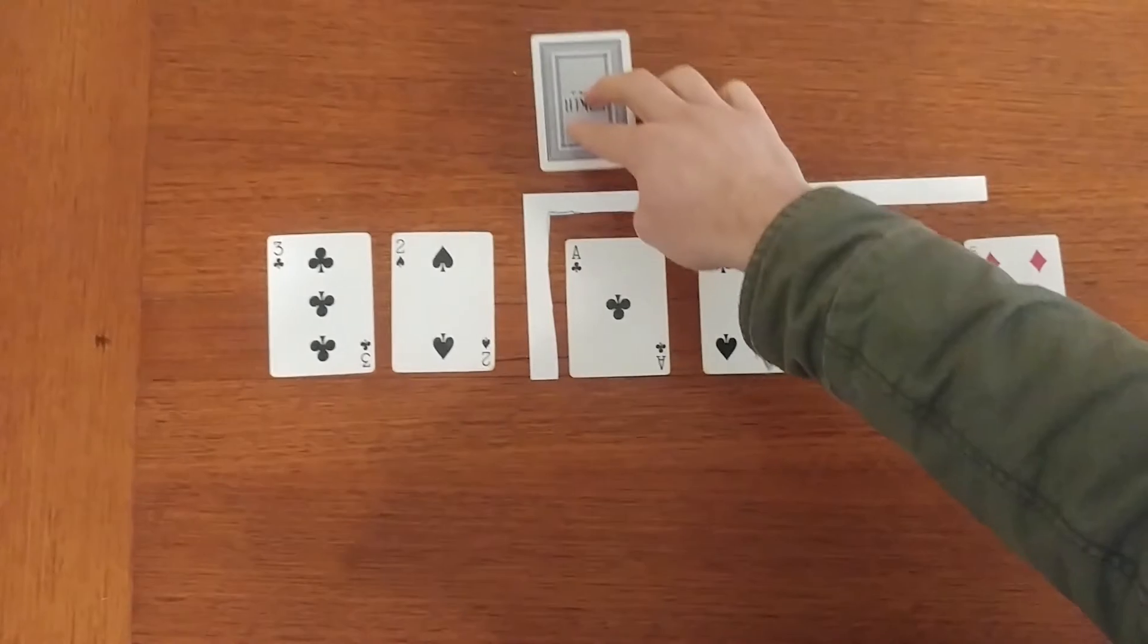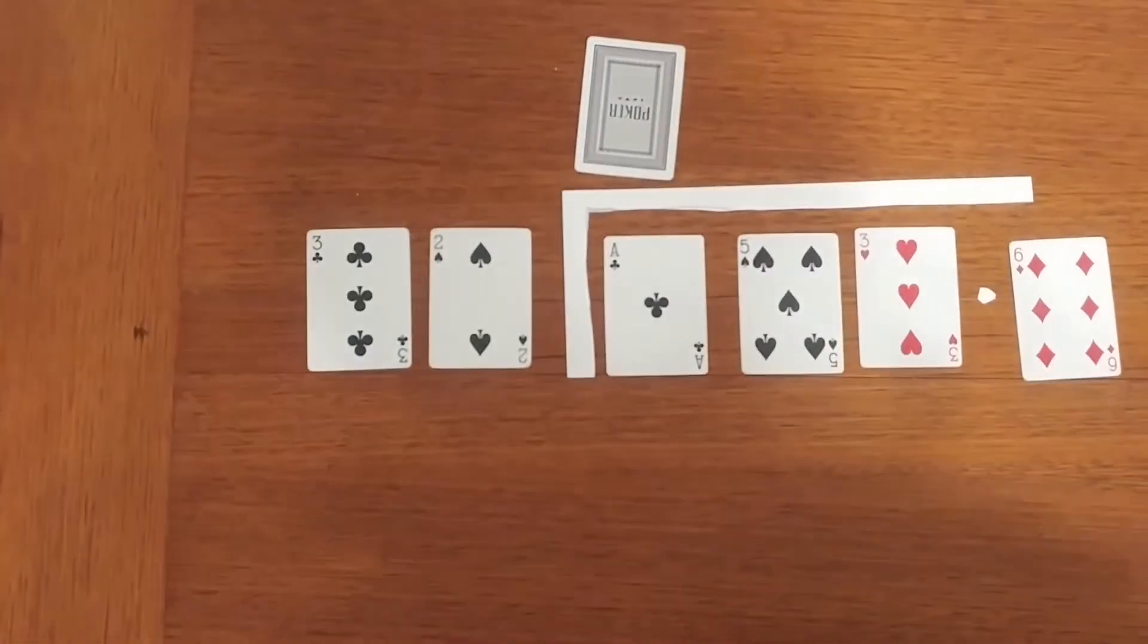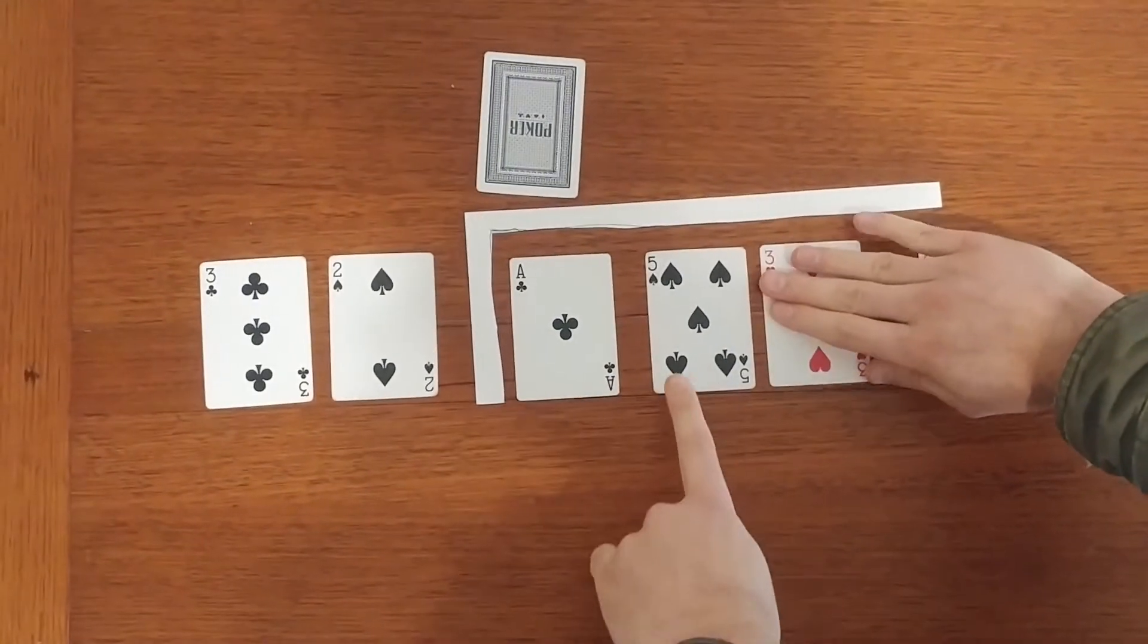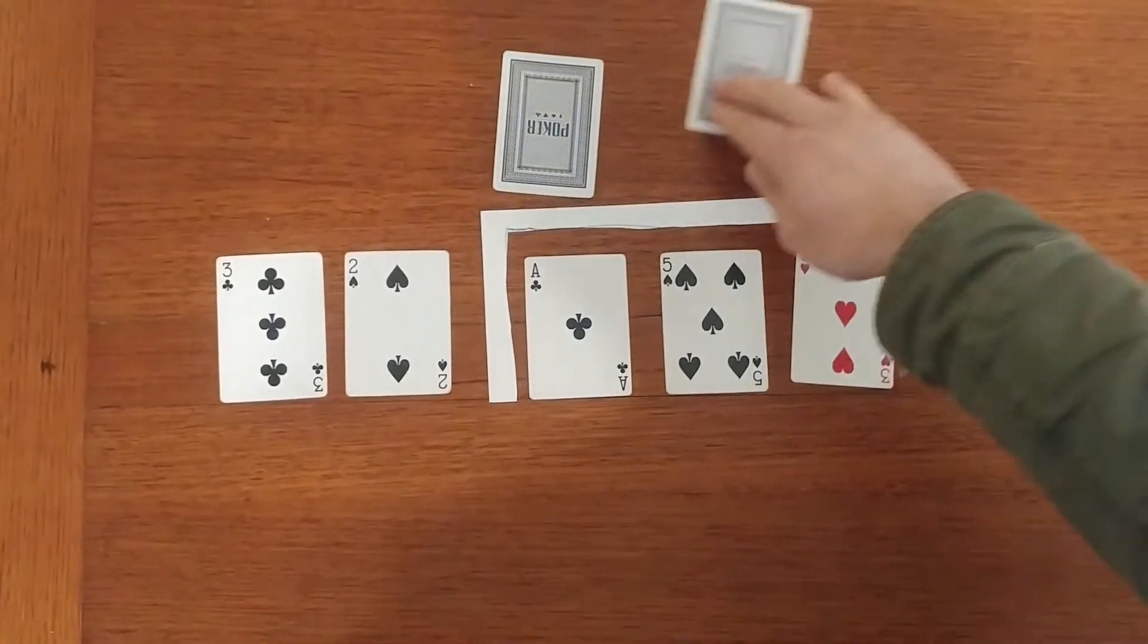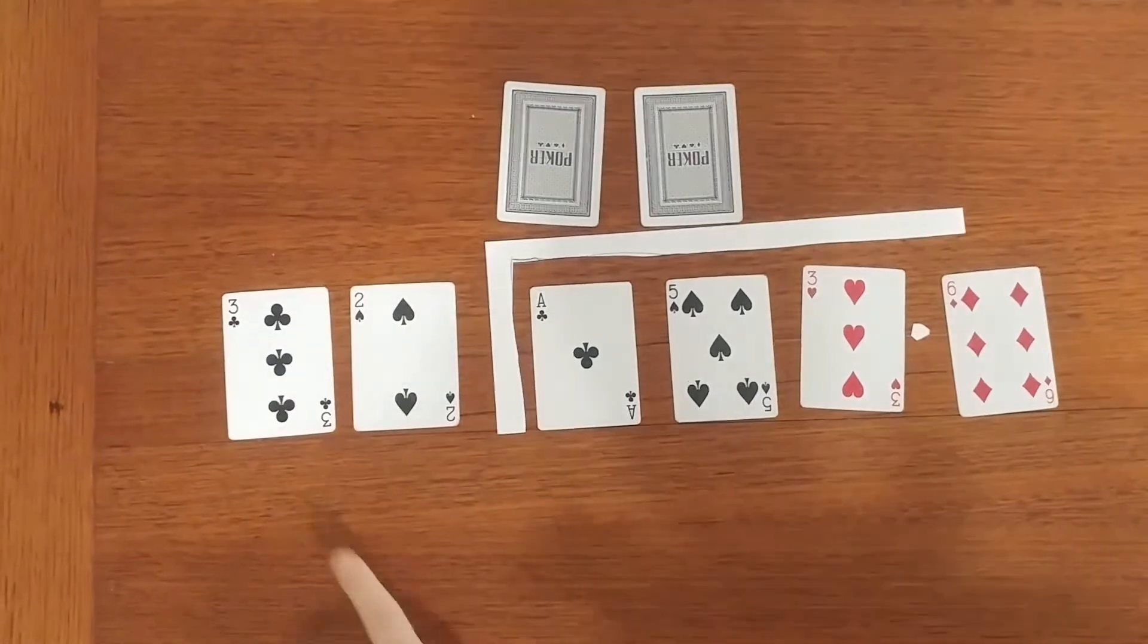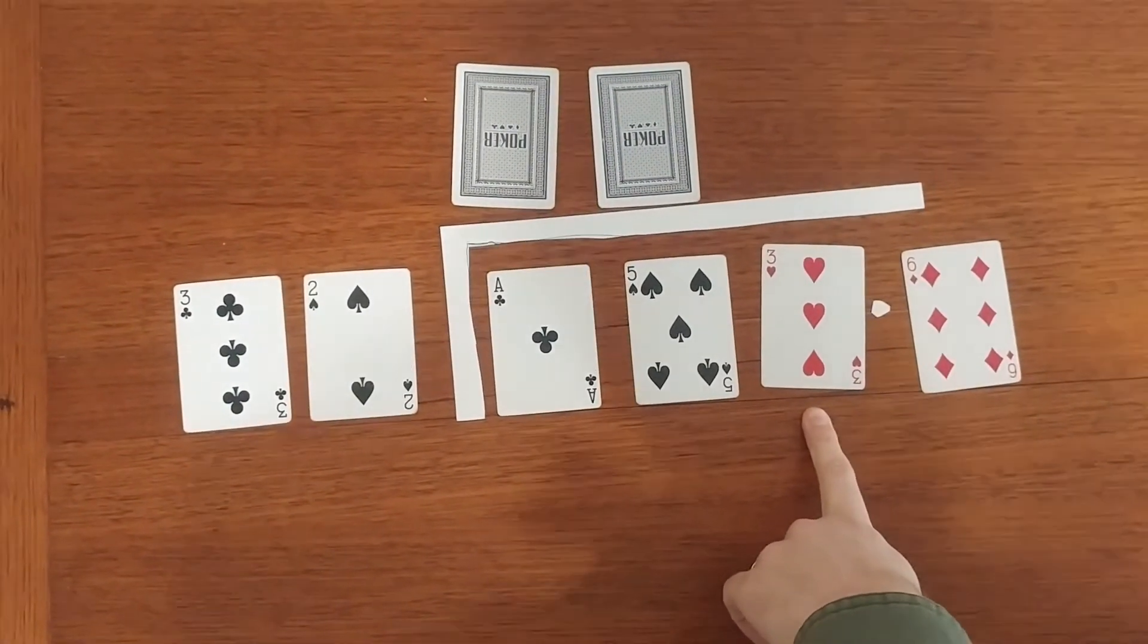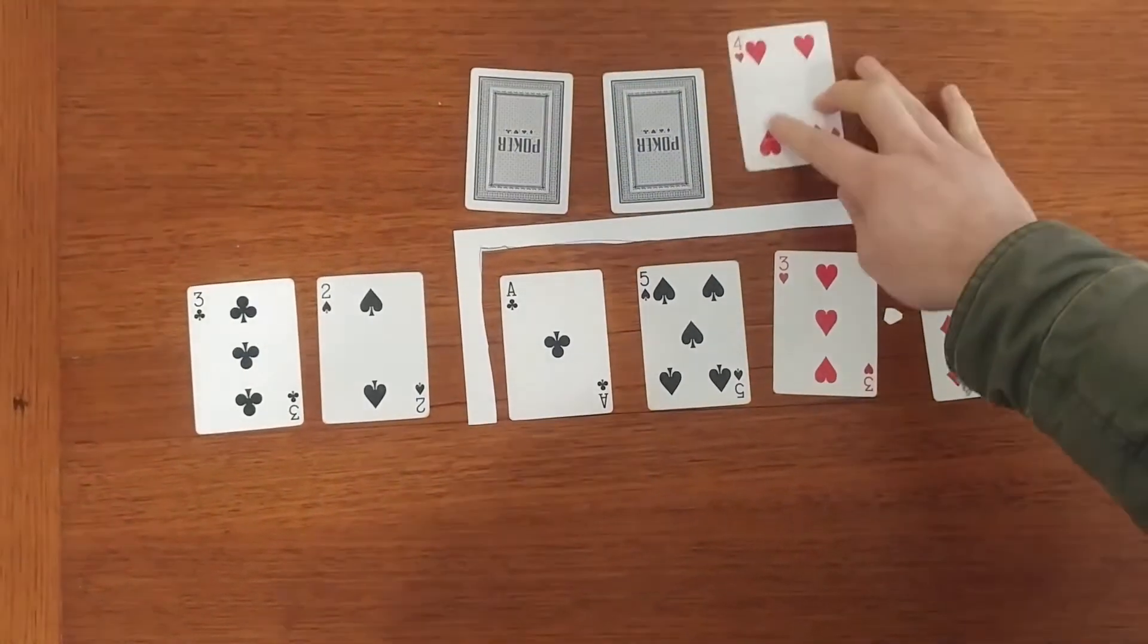So we're going to do 32 divided into 1 is 0. So you can see I've put a playing card backwards there. We're now going 32 into 15 and that is also 0. Now we're going to go 32 into 153, all three numbers and that equals 4.